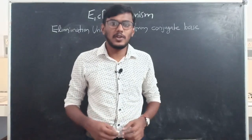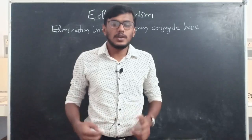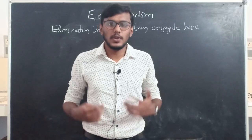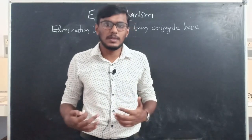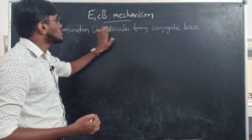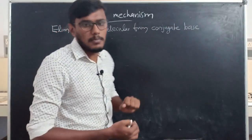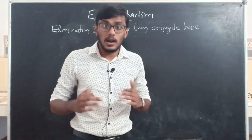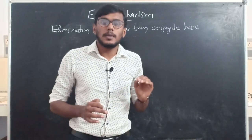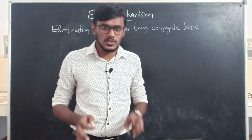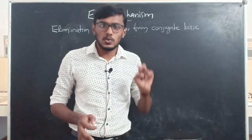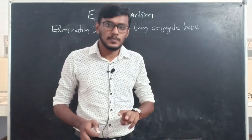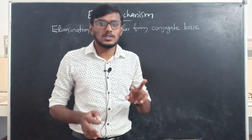Hello everyone, welcome back to our video classes. Today we are going to discuss the E1CB mechanism — that means elimination unimolecular from conjugate base. It is a type of elimination reaction. Like E1, which is elimination unimolecular and is a two-step process, E1CB is also a two-step process, but the order is reversed.